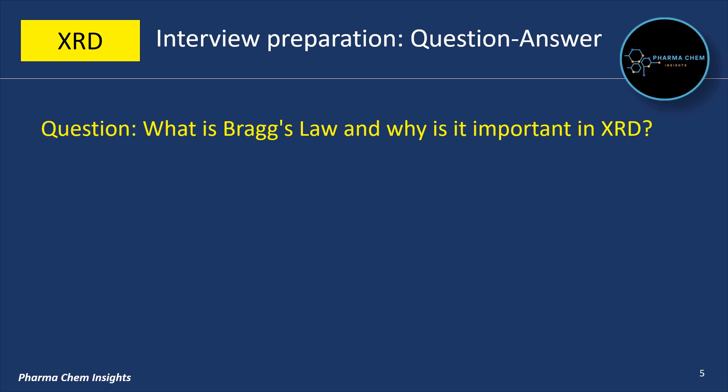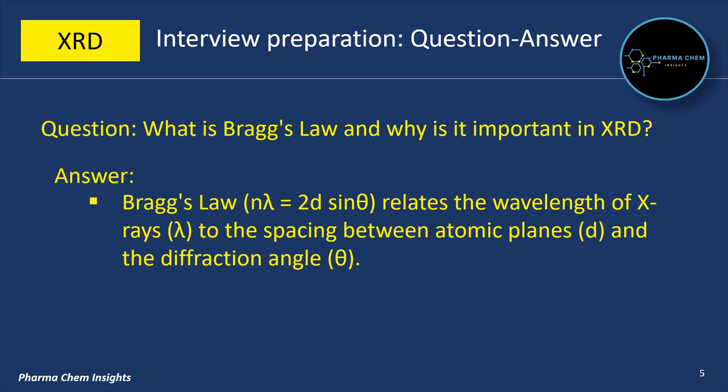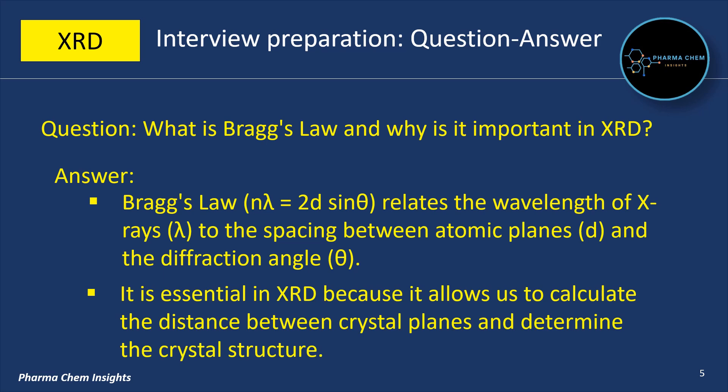Next question: what is Bragg's law and why is it important in XRD? Bragg's law is: n·λ = 2d·sin(θ). Bragg's law relates the wavelength of X-rays (λ) to the spacing between atomic planes (d) and the diffraction angle (θ). It is essential in XRD because it allows us to calculate the distance between crystal planes and determine the crystal structure.